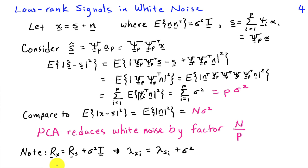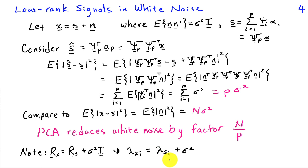This is closely related to the eigenvalue shift property. If R_x, the covariance matrix of data x, equals the covariance matrix of s plus sigma² I, then adding a multiple of the identity shifts all eigenvalues by sigma². So the eigenvalues of x are just the eigenvalues of s plus sigma². If only the first p eigenvalues of s are non-zero, the remaining eigenvalues of x will be exactly sigma². The largest eigenvalues are associated with the signal-plus-noise components, so we can identify signal components by looking at eigenvectors of the largest eigenvalues.